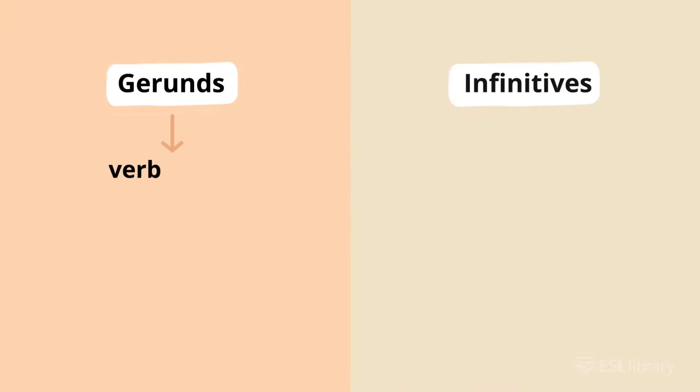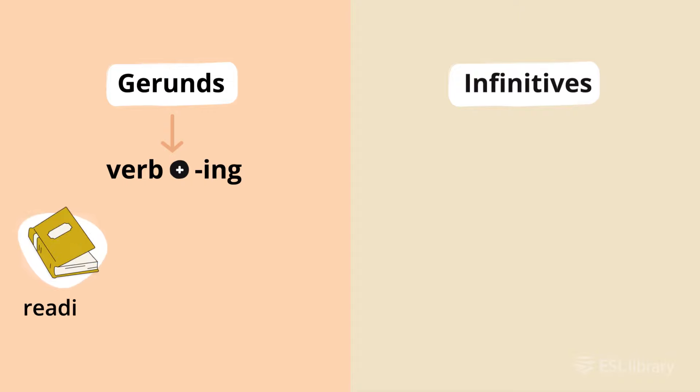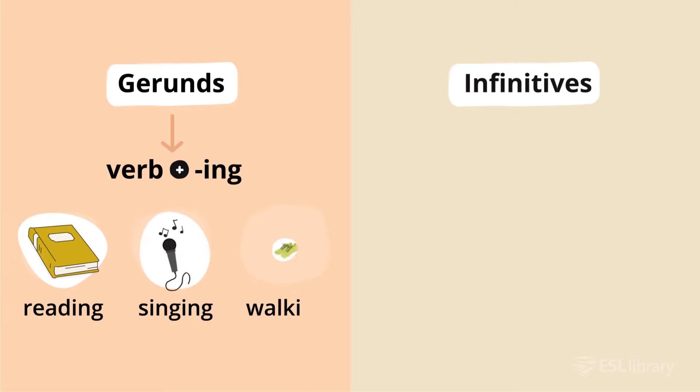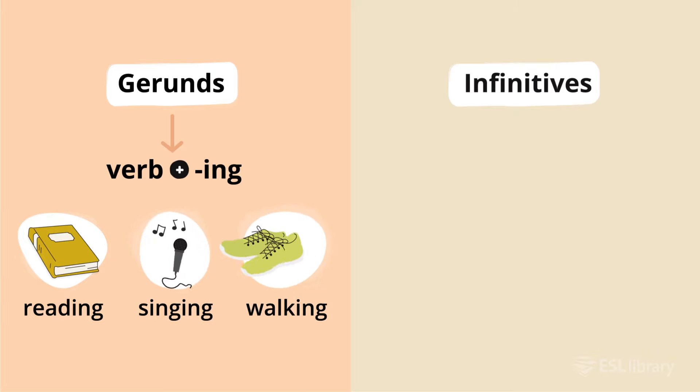Gerunds are formed by adding -ing to the base form of the verb. For example, reading, singing, and walking are gerunds.